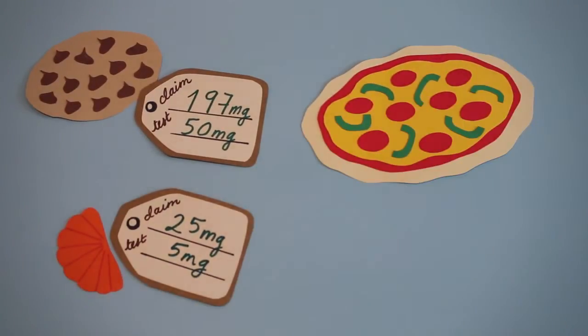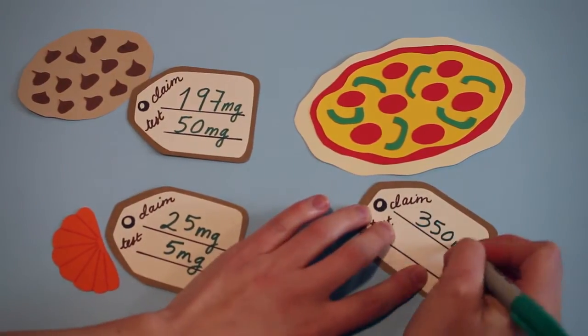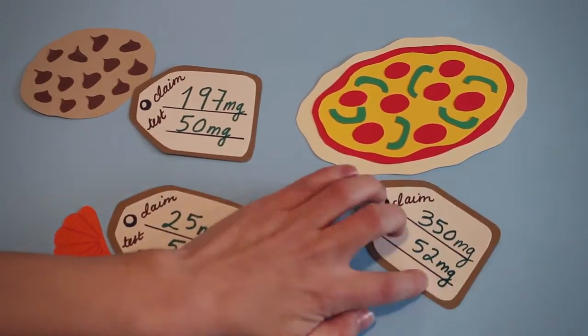A pizza claimed to have 350 milligrams of THC, but our analysis found it only had 52 milligrams.